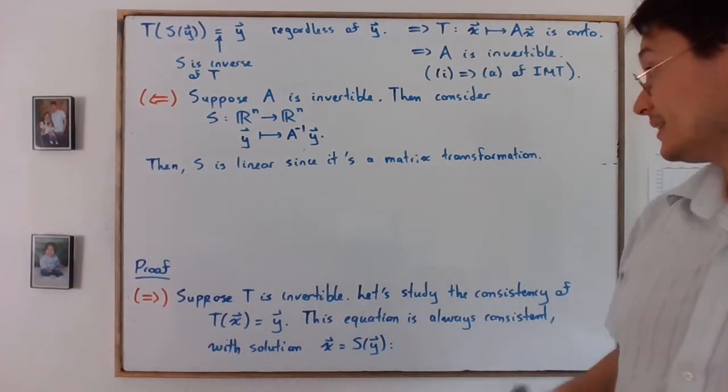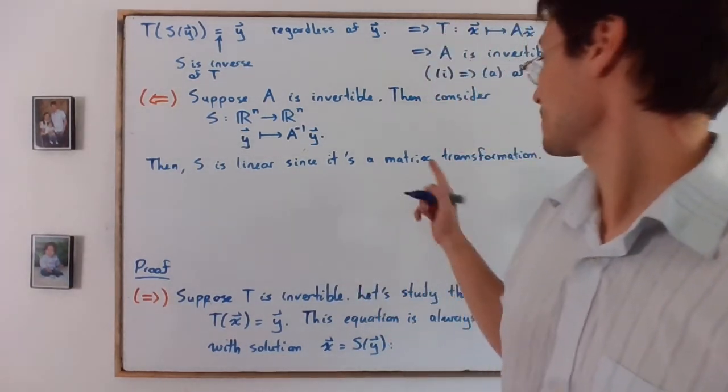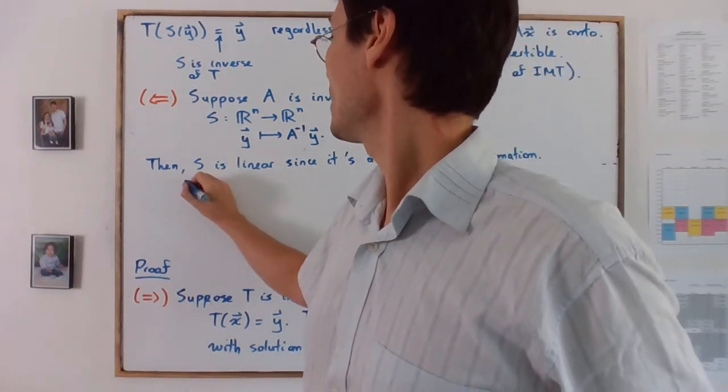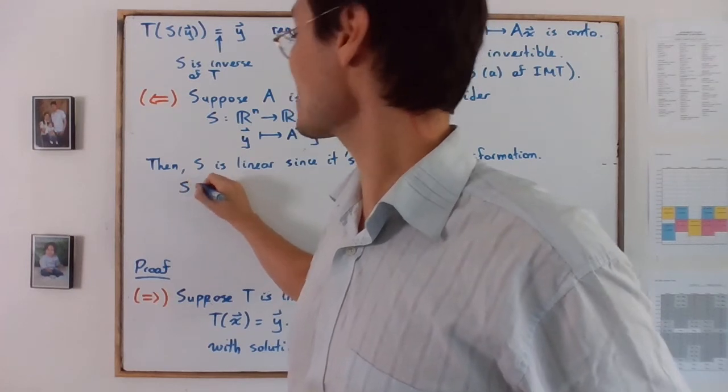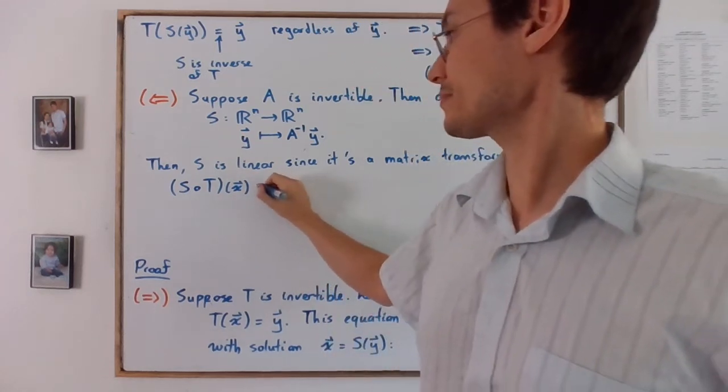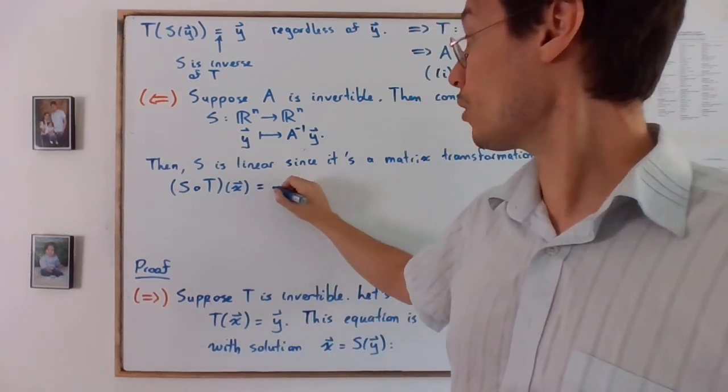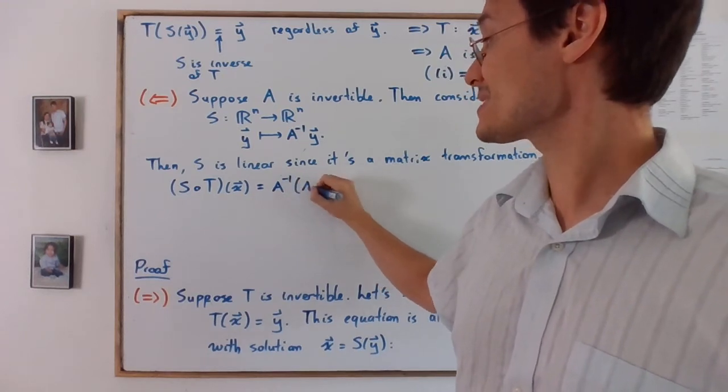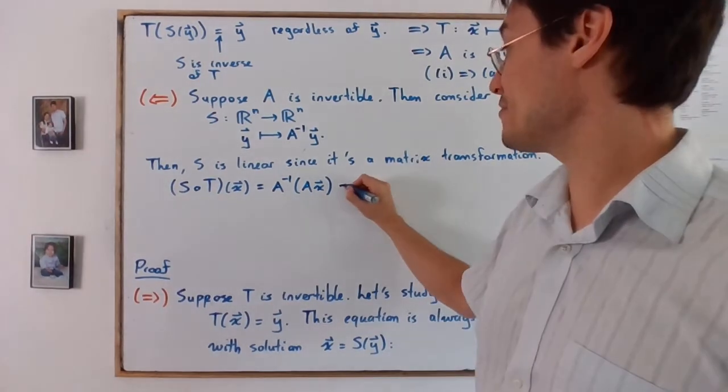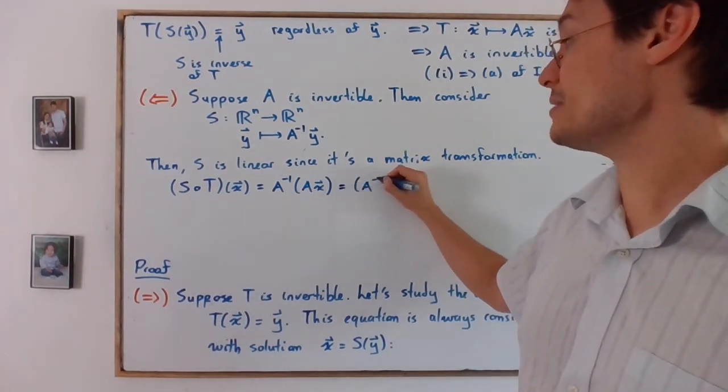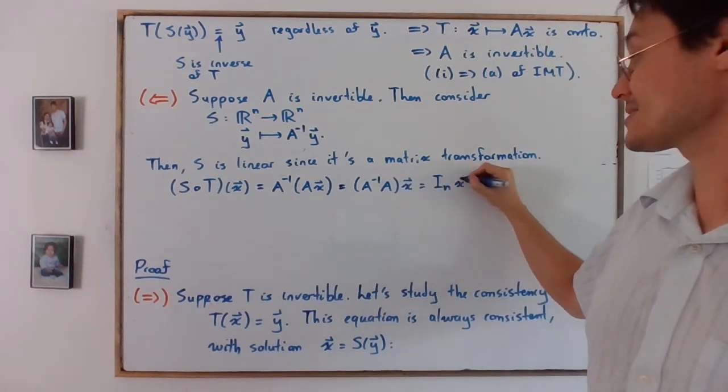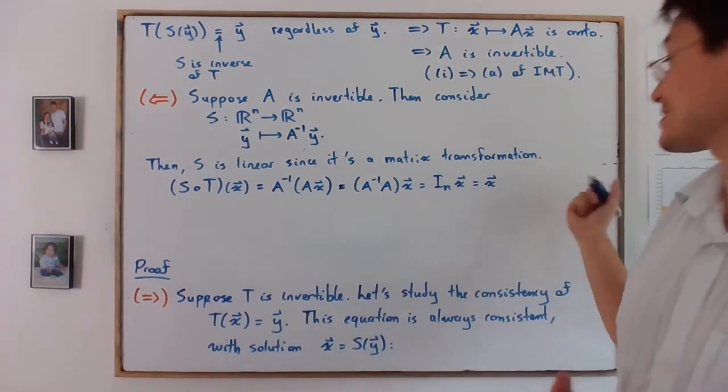And then the idea is that S of T of x is going to be equal to A inverse times Ax. And from there, obviously using associativity, we will have A inverse A times x, which is I_n x, so x. And this is regardless of x.